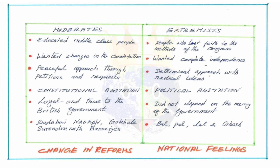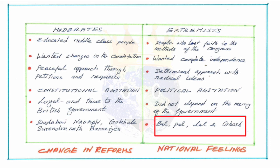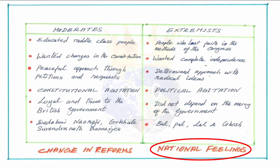Important moderate leaders include Dadabhai Naoroji, Gokhale, and Surendranath Banerji. The extremists are shortly referred to as 'Bal Pal Lal' — that is Bal Gangadhar Tilak, Bipin Chandra Pal, and Lala Lajpat Rai. The moderates targeted only the upper sections of society to bring about change and wanted a place in the British council. But the extremists wanted to spread their ideas to the masses to achieve freedom, and they initiated national feelings among the people of India in a very elaborate manner.